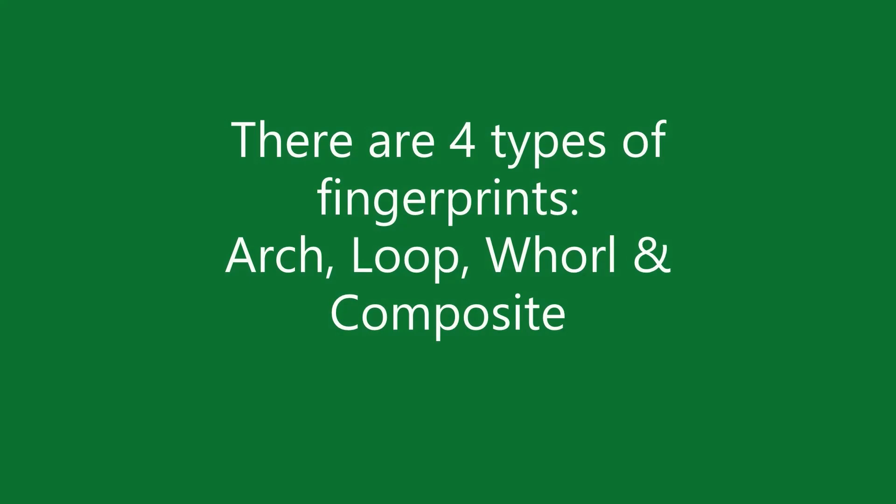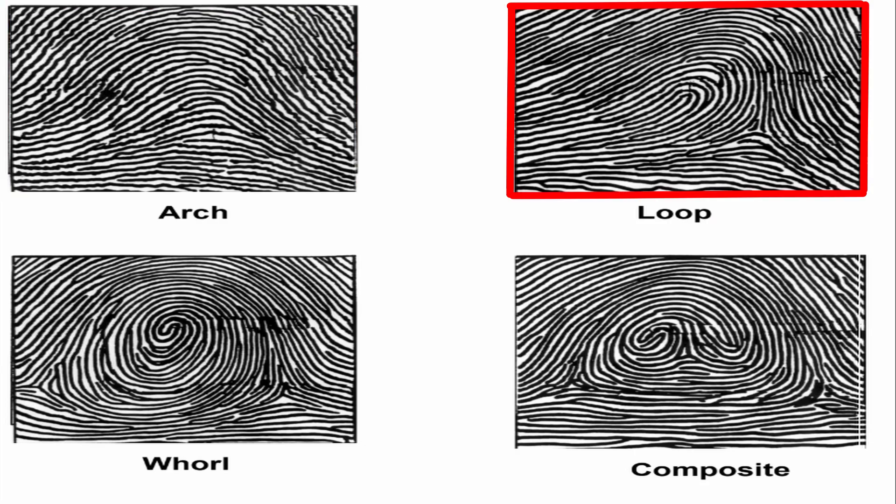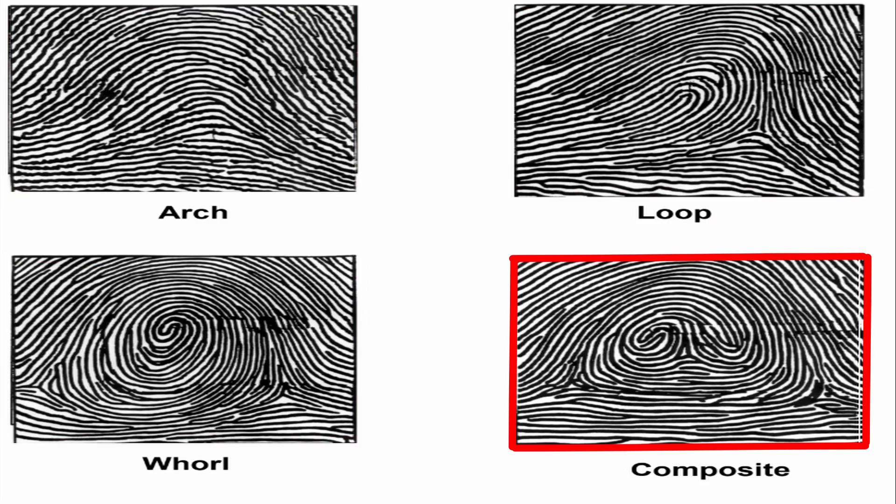Fingerprints can be grouped into four categories: an arch, a loop, a whorl, and a composite. Composite fingerprints are combinations of patterns. Which categories do your fingerprints go into? You can pause the video here to decide.